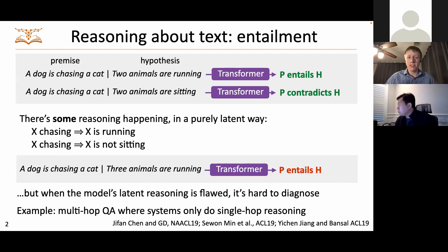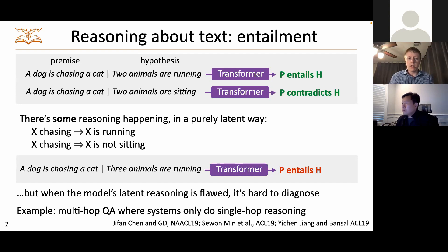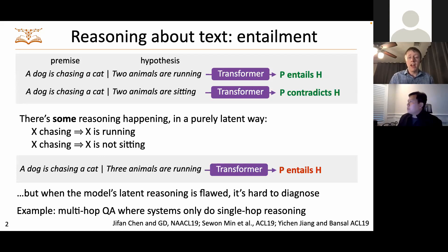When these models go wrong, it's really hard to diagnose. One of my favorite examples is multi-hop reasoning, particularly the HotpotQA dataset. My student Jifan, along with a few others, independently found that basically some models we thought were doing multi-hop reasoning and combining multiple facts were actually just answering questions in a single-hop way and getting reasonably good performance. The only reason this was surprising is because it was all happening inside neural nets, so we couldn't see what was going on.